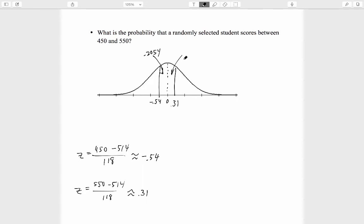When we look up 0.31 in the table, we obtain 0.1217 as the probability, and that means the answer to our question will be the sum of 0.2054 and 0.1217, which equals 0.3271.